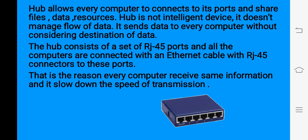Hub allows computers to connect through its ports and share data resources. However, hub is not an intelligent device — it cannot manage the flow of data. It sends data to every computer without considering the destination, which means every computer receives the same information and it slows down the speed of transmission. Hub consists of a set of RJ45 ports, and all the computers are connected with an ethernet cable using RJ45 connectors to these ports. This is how a hub works in networking.